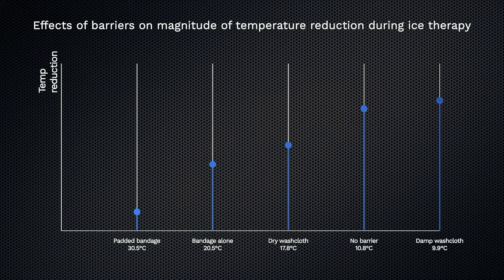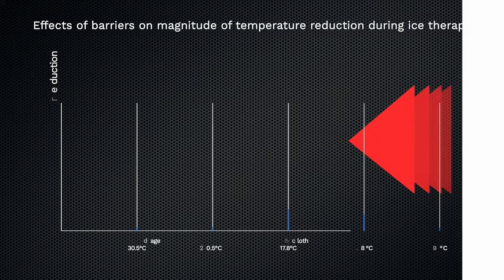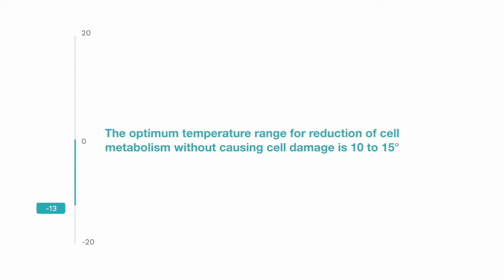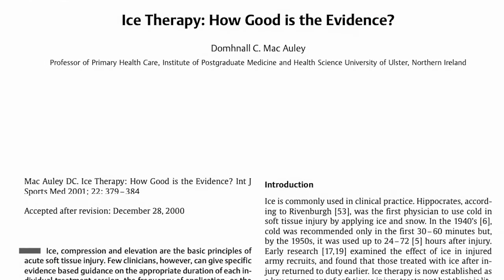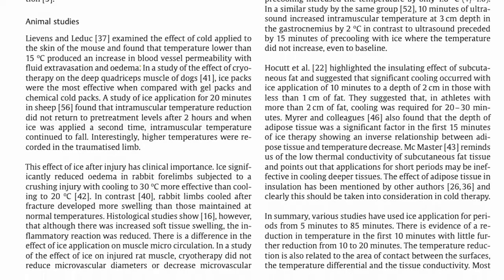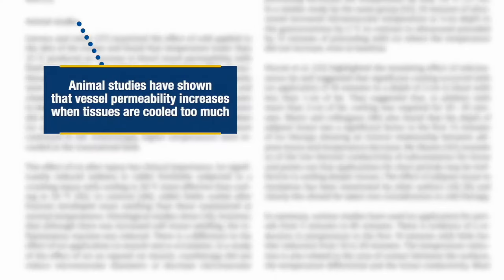Regarding the effect of a barrier between the ice and the skin, you can see here the extent to which different barriers affect cooling. At one end, a padded bandage limits the amount of cooling, whereas a damp washcloth is associated with a larger reduction in skin temperature. The optimum temperature range for reduction of cell metabolism without causing cell damage is around 10 to 15 degrees centigrade. If you cool tissues beyond this level, the body tries to protect itself — animal studies have shown that vessel permeability actually increases when tissues are cooled too much, and this should be avoided.